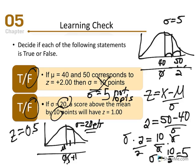That concludes Part 2 of Chapter 5. In the next lecture video, we'll discuss the process of standardizing a distribution, which requires a predetermined mean and standard deviation to create a new distribution. We have our X-distribution, our Z-distribution, and now we'll create a new X-distribution with a predetermined mean and standard deviation.